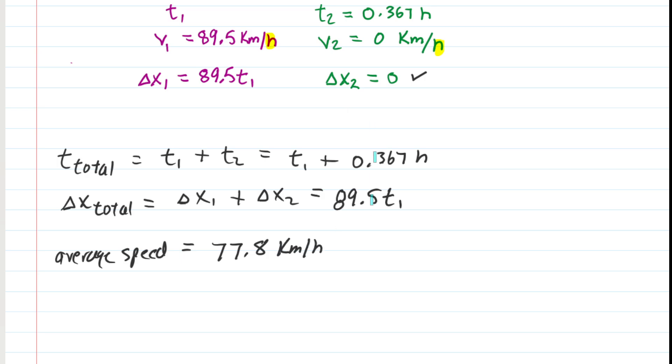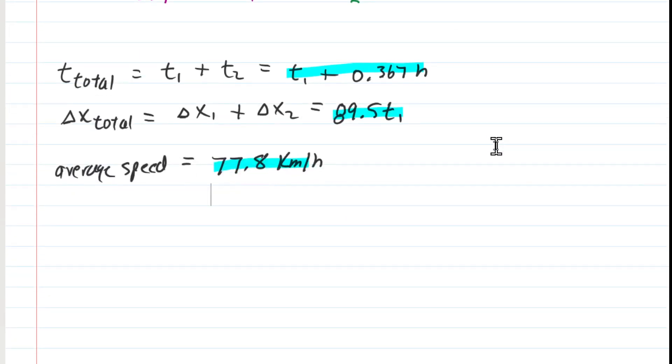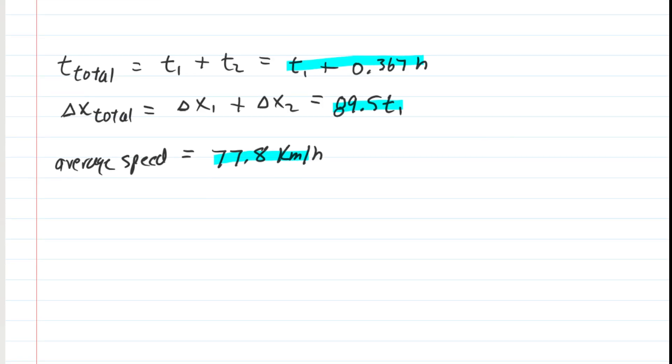So now we can take all of these data. We have time for the entire journey, distance for the entire journey, and then the average speed for the entire journey. And we're going to plug it into our handy equation. Remember average speed was the total distance divided by the total time. So we would have 77.8, which is our average speed, equals the total distance of 89.5 T1 over the total time, which is T1 plus 0.367.